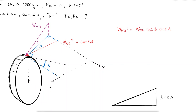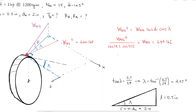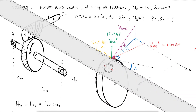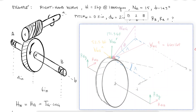For a lead of 0.5 inches and a circumference of 2π times the pitch radius, I find a lead angle of 4.55 degrees. With a pressure angle of 14.5 degrees and a lead angle of 4.55 degrees, I find a total force of 684 pounds. The radial component is 171.3 pounds and the axial component is 52.5 pounds. With this information, a sum of forces and moments in the XY and XZ planes gives the reaction forces at bearings A and B.